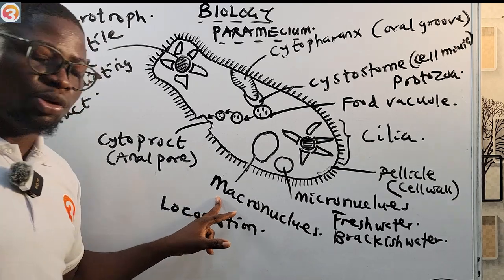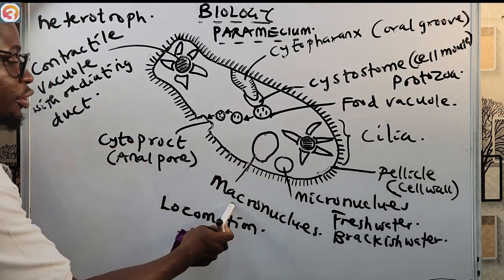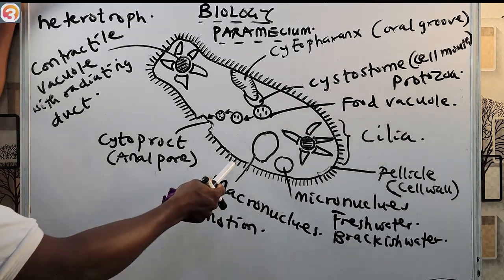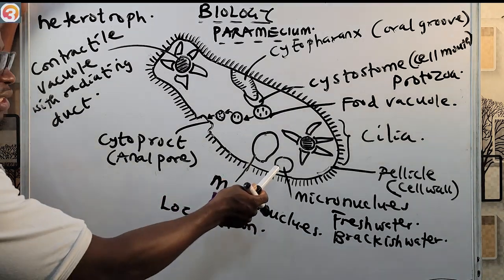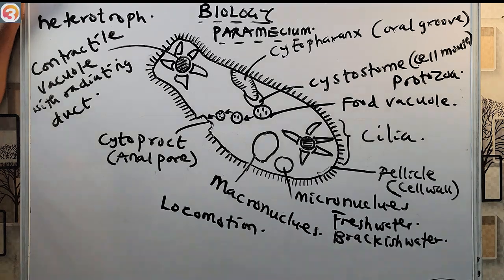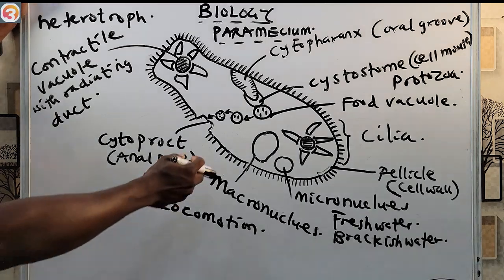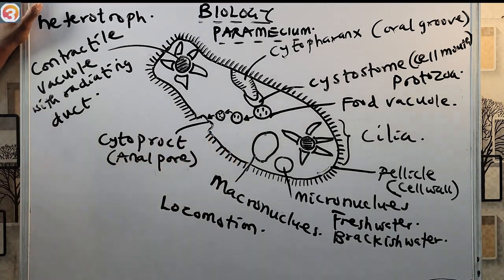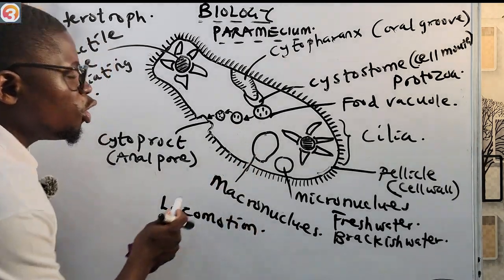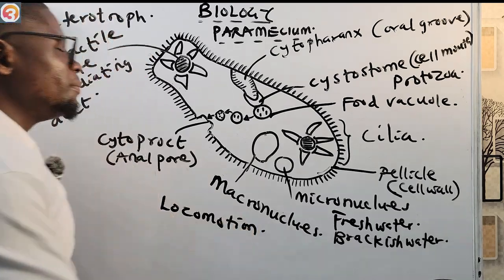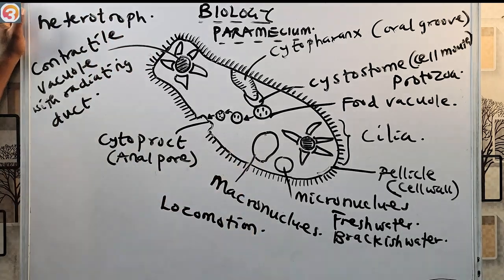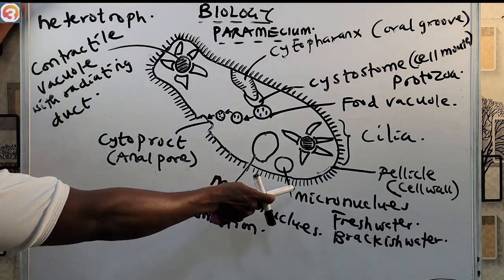Paramecium has two types of nucleus: the macronucleus and the micronucleus. The macronucleus is large and polyploid. The micronucleus is small and diploid. The macronucleus is a large polyploid nucleus that controls all metabolic activities of the organism.